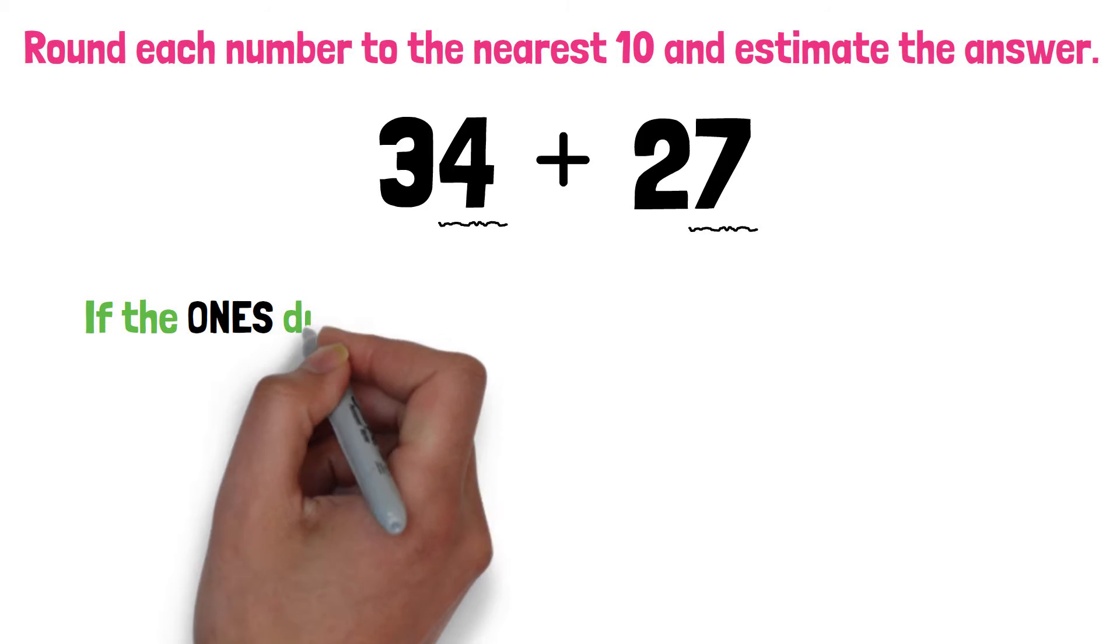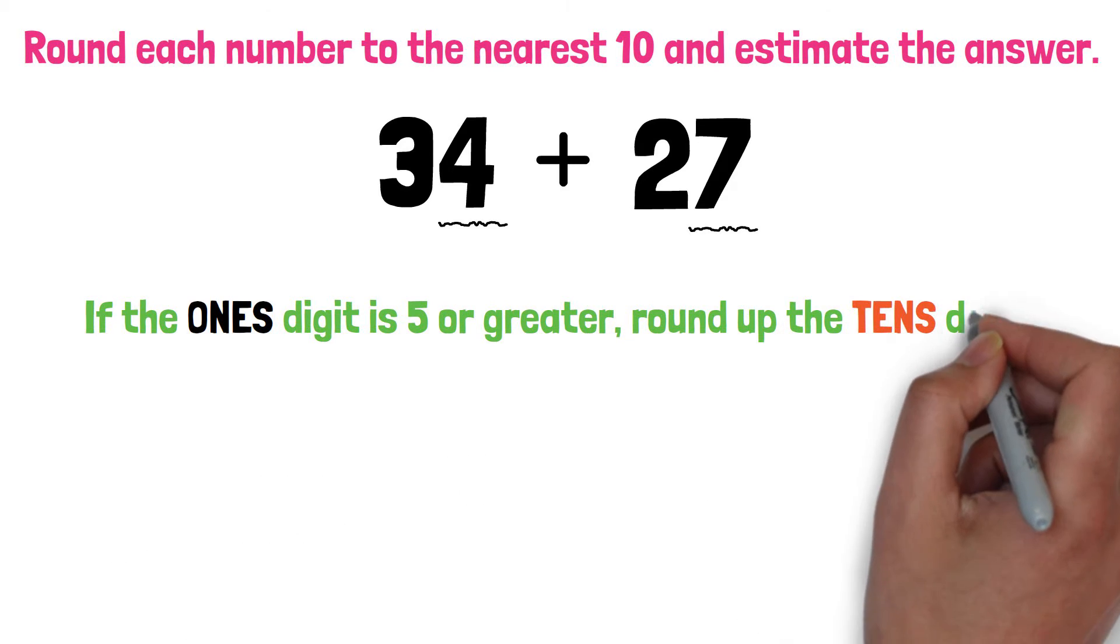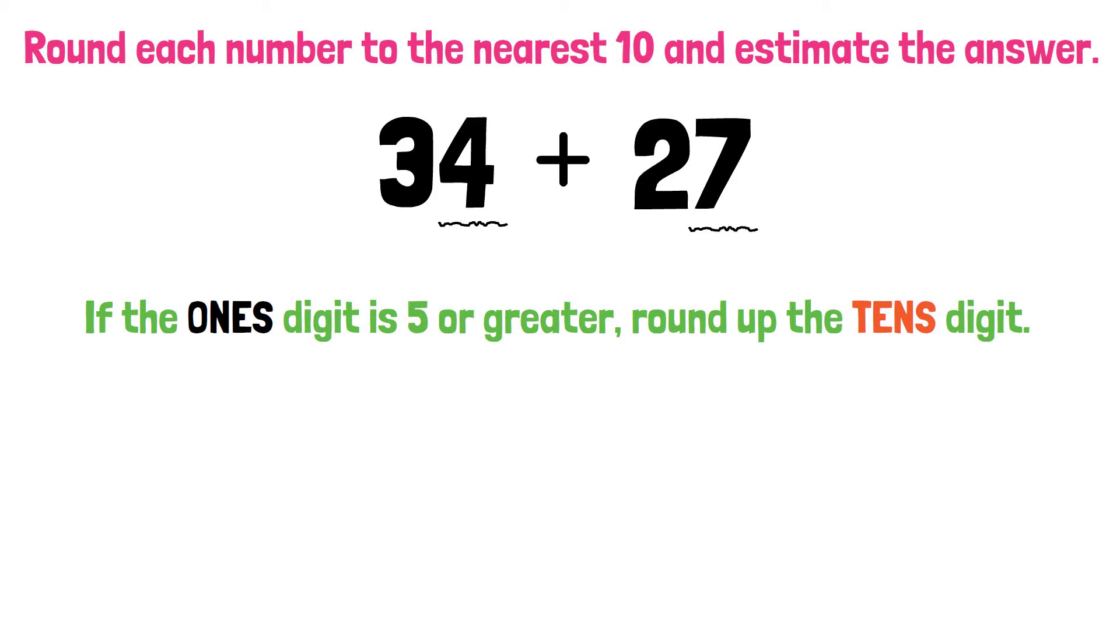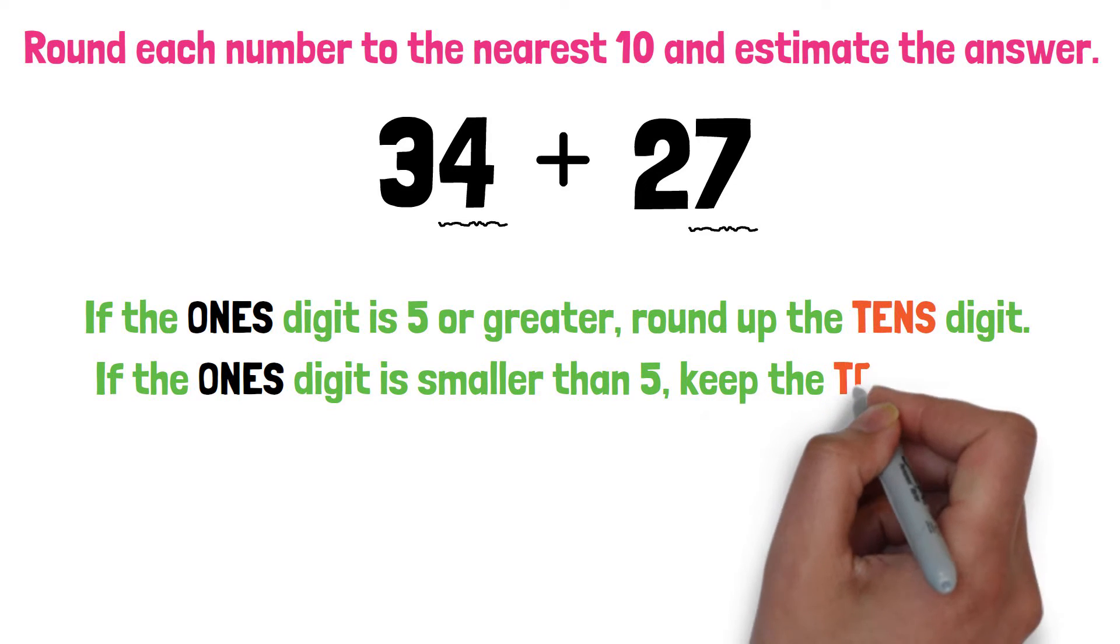If the 1's digit is 5 or greater, round up the 10's digit. If the 1's digit is smaller than 5, keep the 10's digit.